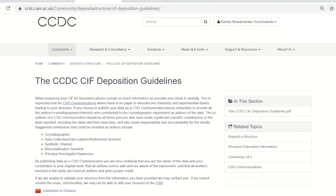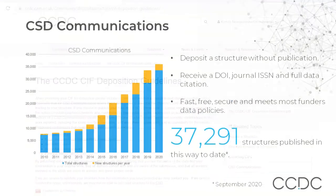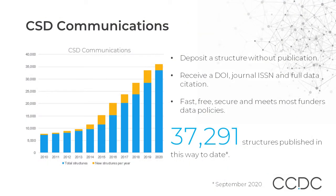Once your data is deposited with us, we will include it in the Cambridge Structure Database, or CSD for short, and it will be scientifically checked — it will undergo standard procedures such as validation and curation. CSD Communications are completely free to deposit, publish, and access, and have been available to our users since 1976. We currently have over 30,000 datasets deposited and published in this way, and last year we were the number one place to publish structures.